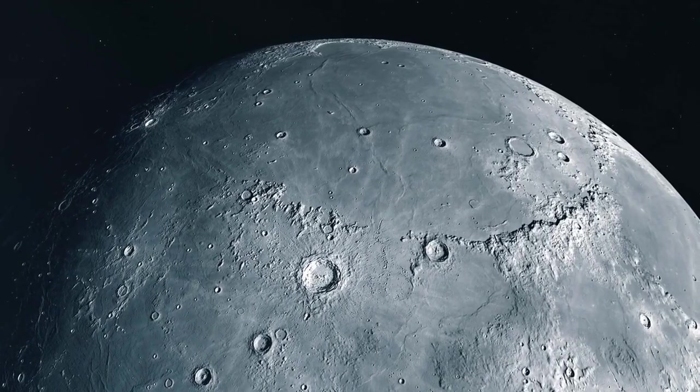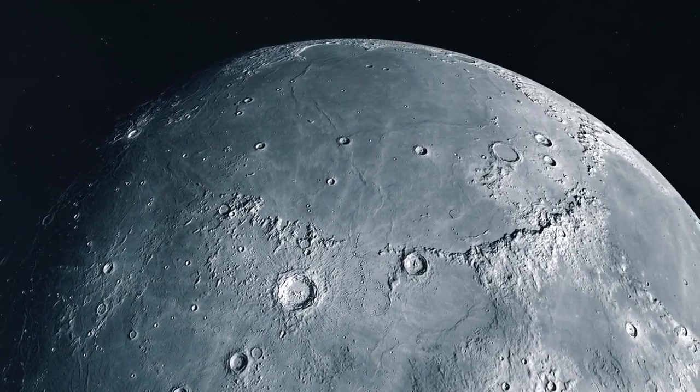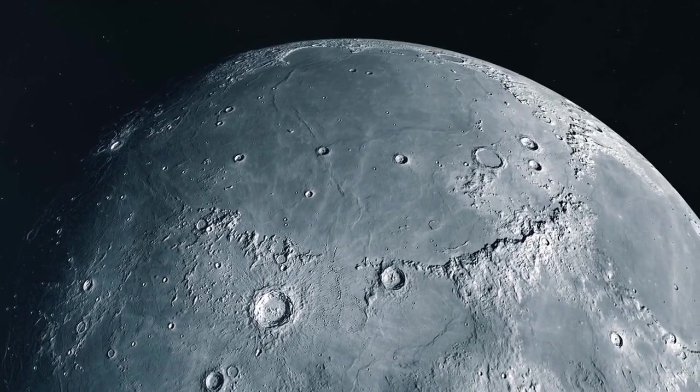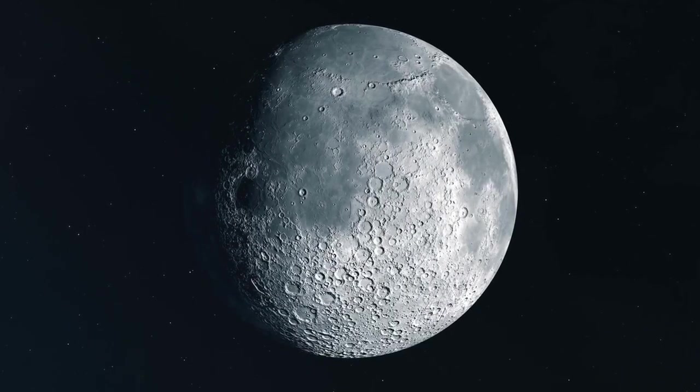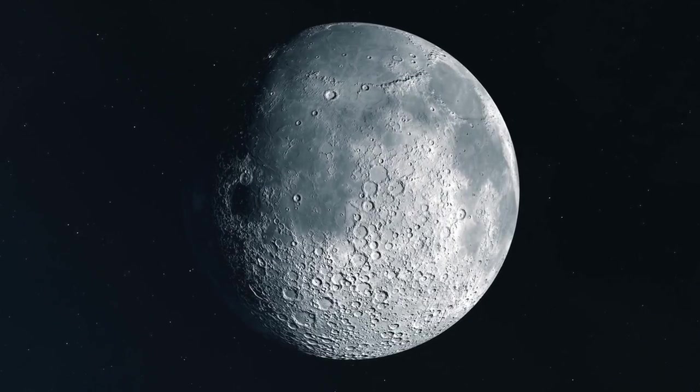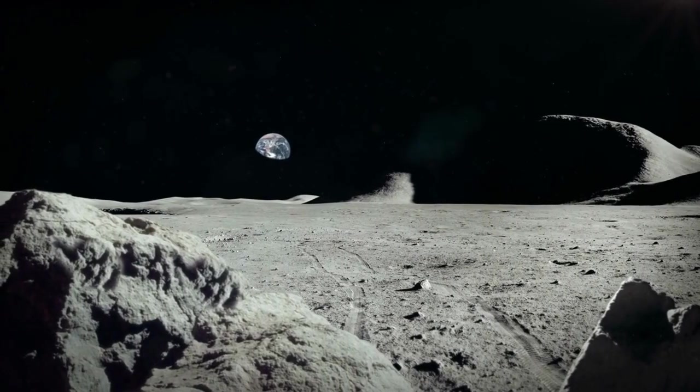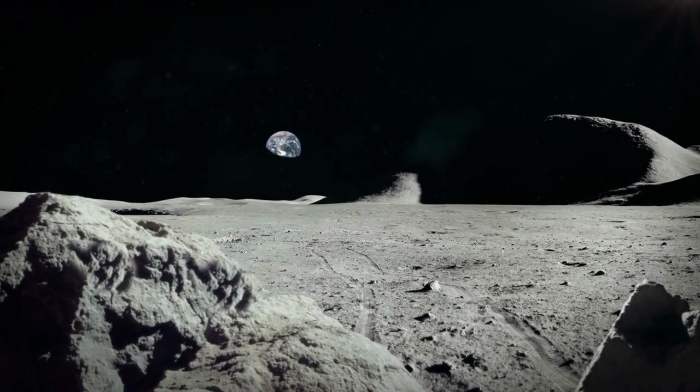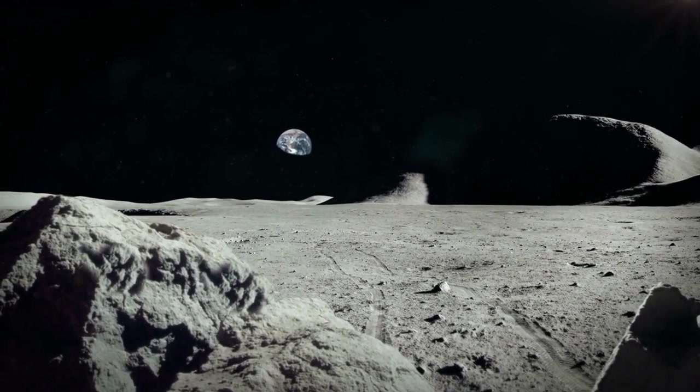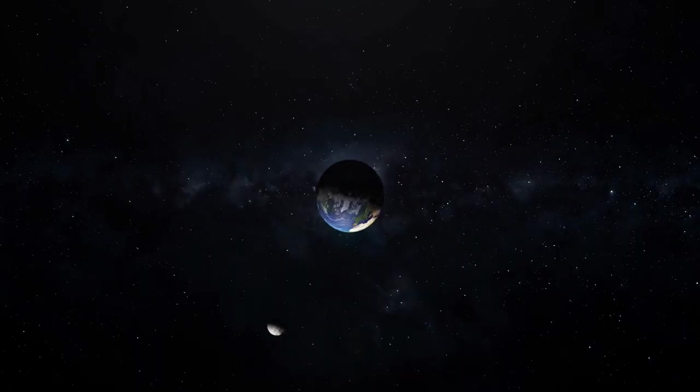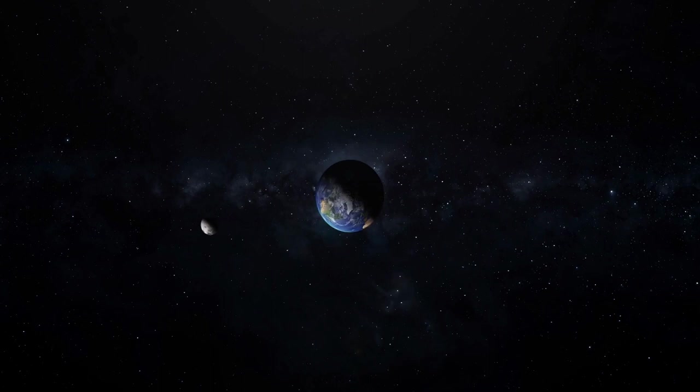It is the fifth largest moon in the solar system, with a gravity only one-sixth of Earth's. Its surface is barren but covered with craters, mountains, and valleys. The moon's temperature can span from 123 degrees to minus 233 degrees Celsius. Its orbit around Earth is elliptical, and its rotation is tidally locked, meaning the same side of the moon always faces us.